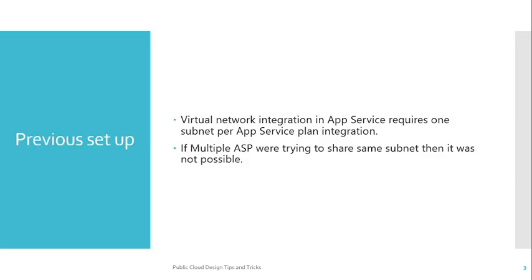This feature is primarily for multi-tenant app services. In the previous setup, if you want to control the outbound traffic of an app service inside a virtual network, you do a virtual network integration. For example, to send outbound requests from your app service to your database via virtual network, you integrate the subnet to the app service plan. Previously, only one subnet could be linked to one app service plan.